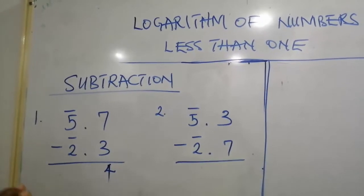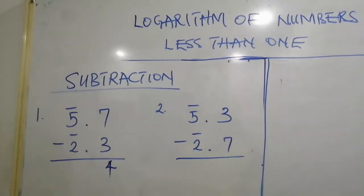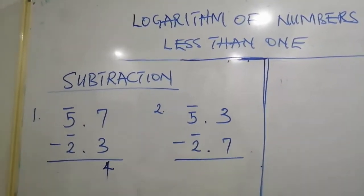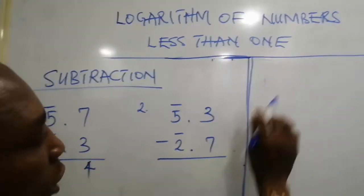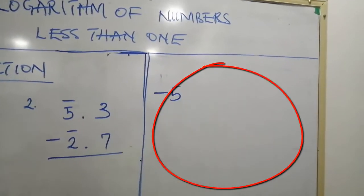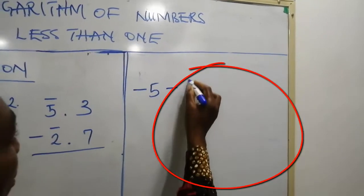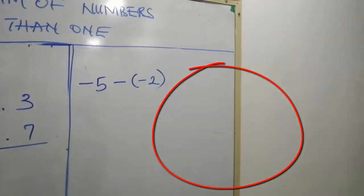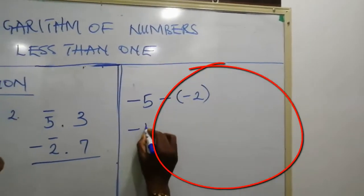You are going to see this bar 2 as minus 2 and bar 5 as minus 5. Let us do the rough work here. Minus 5, minus, minus 2. That will give us minus 5.